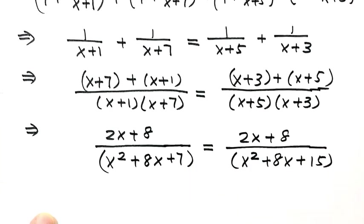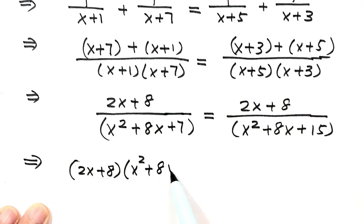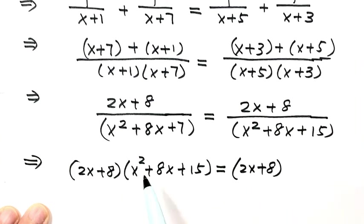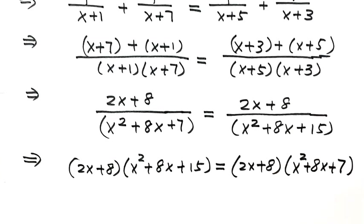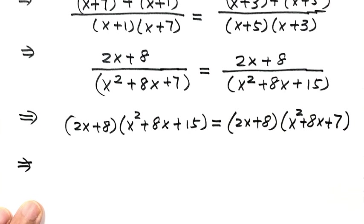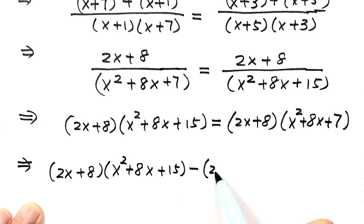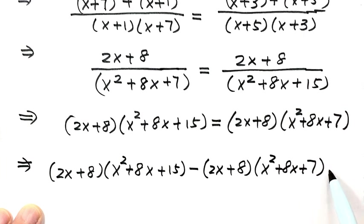Now let's cross multiply: (2x+8)(x²+8x+15) = (2x+8)(x²+8x+7). Next, move all terms from the right-hand side to the left: (2x+8)(x²+8x+15) - (2x+8)(x²+8x+7) = 0.